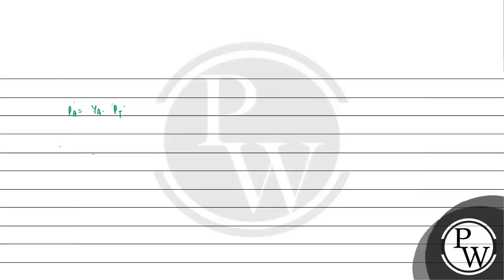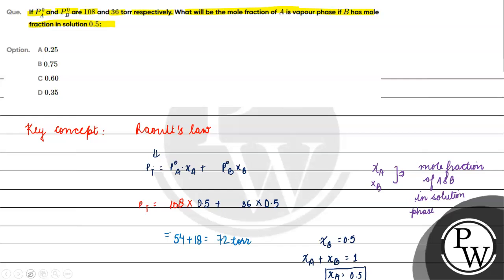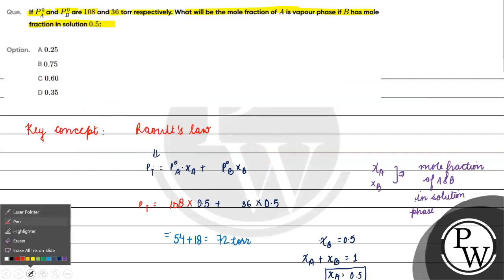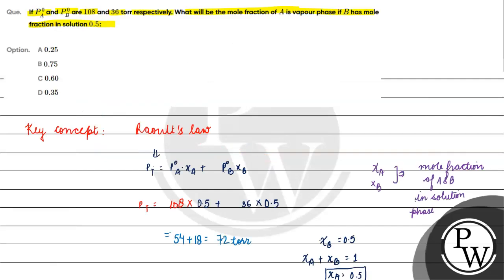PA is equal to P0A into chi A, which is 108 into 0.5, equal to 54. So Y_A will be equal to 54 divided by 72. Dividing both by 18, we get 3 by 4, which is equal to 0.75.